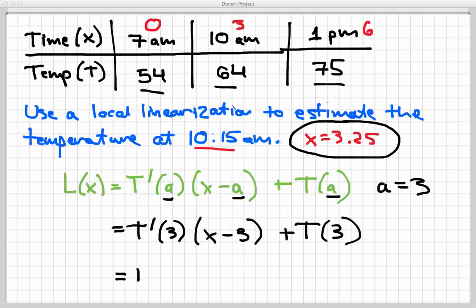T'(3) we'll have to think about in just a second. X is, we'll talk about that in a second, but T(3) is right up here in the table. That is the temperature value at time equals 3. So that's just going to be 64. So I'll make that quick substitution.